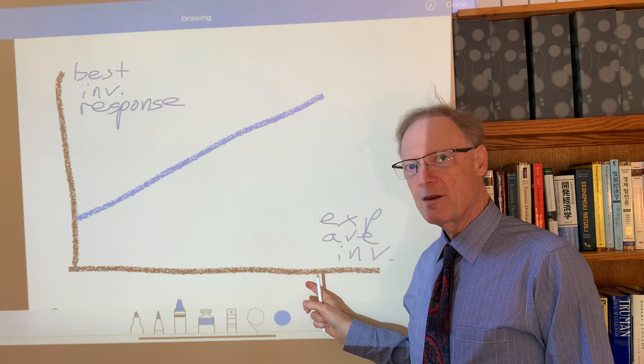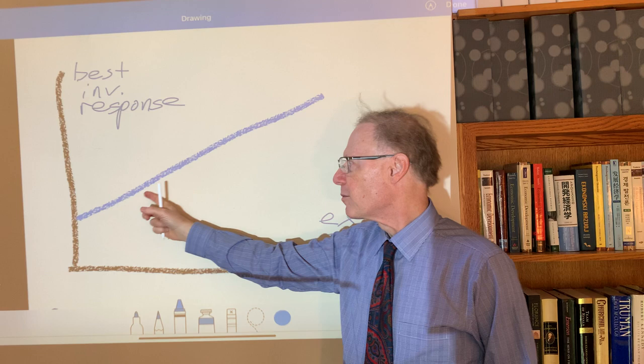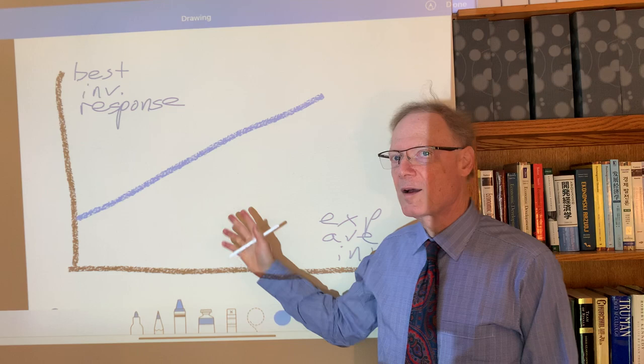This is positive sloping because based upon profit maximizing considerations, the firm decides to in fact invest more. So this is upward sloping. This is complementarity.